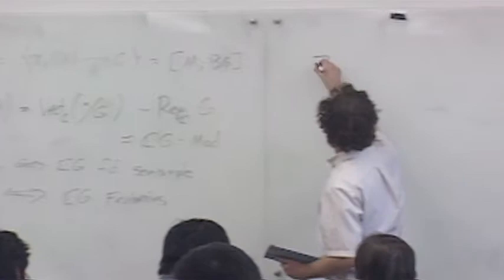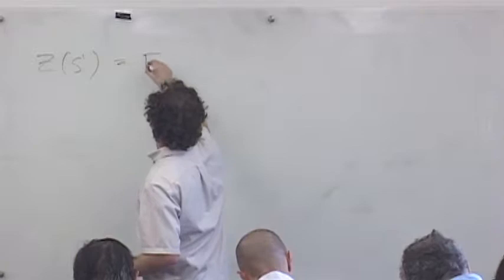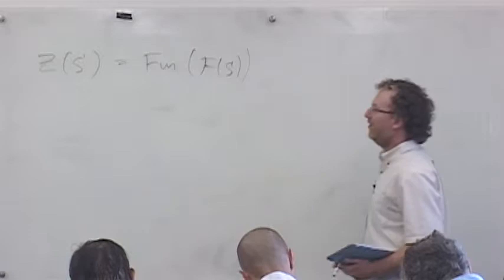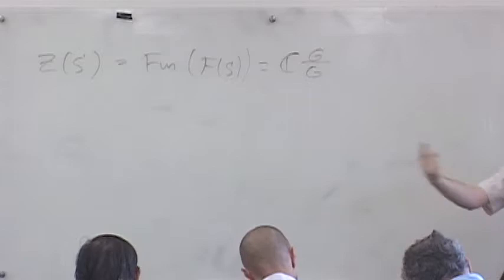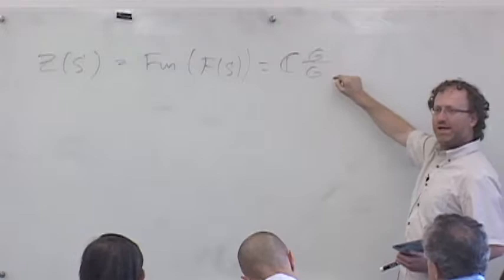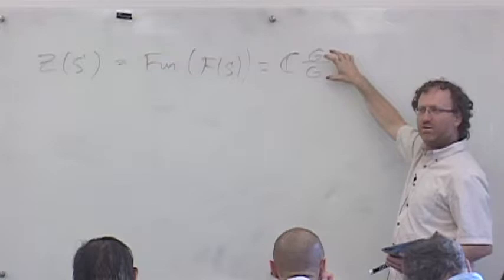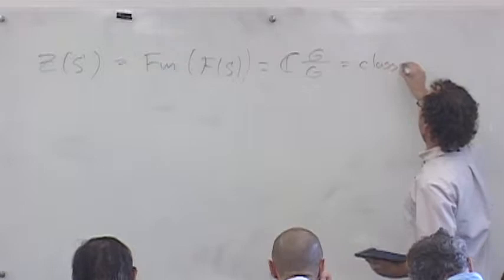So Z of S¹: this is going to be functions on G/G. What are fields on the circle? A field on the circle is given by its monodromy — it's an element of the group up to conjugation. So this is G modulo the conjugation action. That's flat connections or G-covers of the circle. And you look at functions there — that just means class functions. So that's class functions on my finite group.